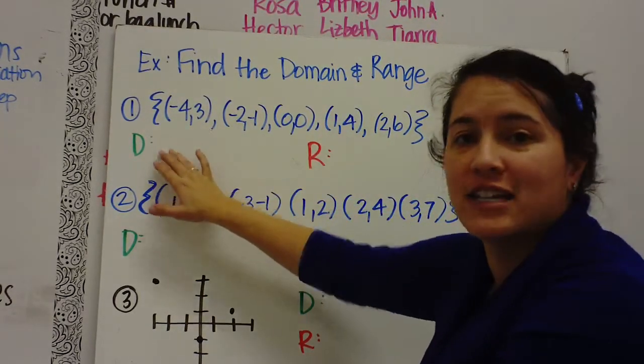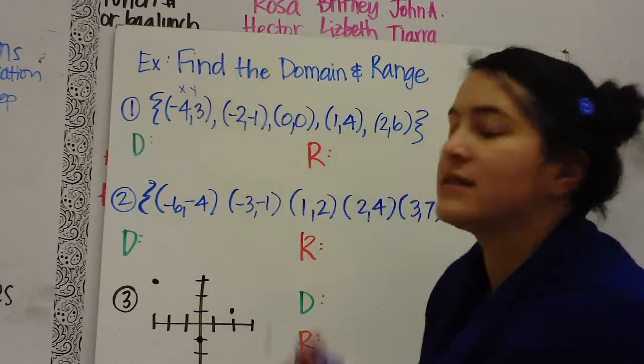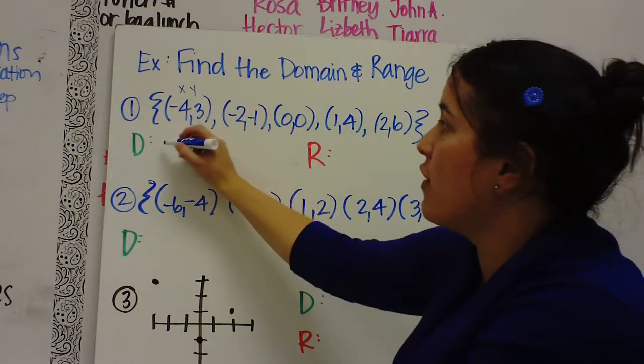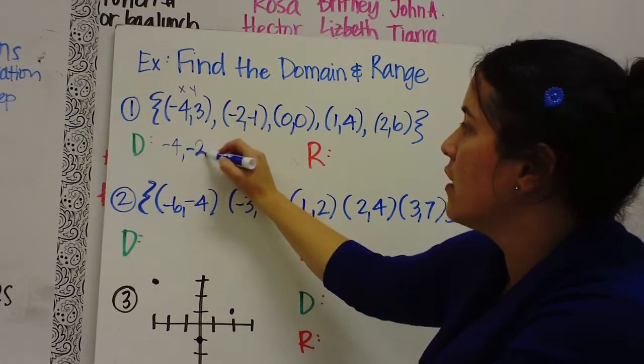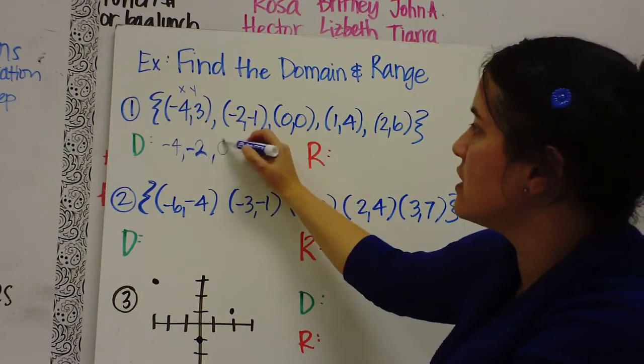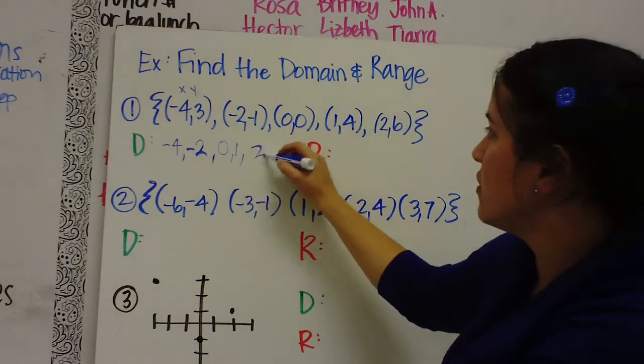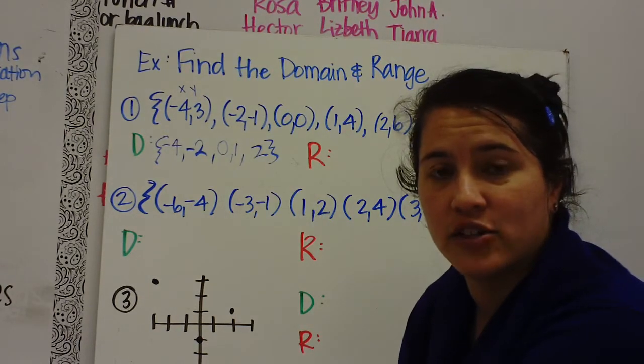And the domain is the X values. So in an ordered pair, the very first one is the X and the second one is the Y value for every ordered pair. So the domain are going to be all the X values. So we have negative 4, negative 2, 0, 1, and 2. Those are the domains of that relation.